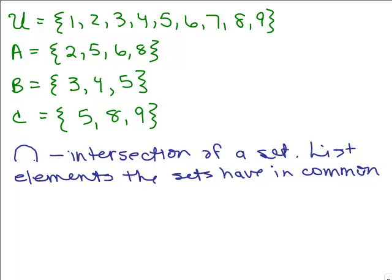There's a new symbol, it looks like an upside down U and what it means is intersection. And if you have an intersection between two sets, it means list the elements the sets have in common. So let's do A intersect B. So if I look at A and I look at B, I say what do they both have in common? An easy way to do it is start with the smallest set, the one that has fewer numbers like B, and see if 3 is in both sets, no. Is 4 in both sets? No. Is 5? Yes.